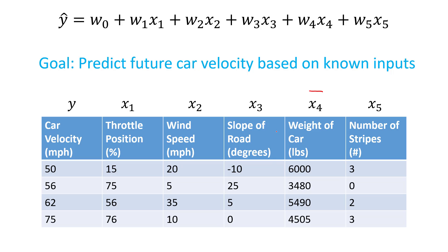Throttle position — the more you push on the gas, of course the faster you think the car is going to go, so we would expect this to be a positive correlation. Both weight and throttle are still important features. Wind speed is actually a tricky one because we don't have data on wind direction, and whether that's helping or hurting us — this feature may just produce noise without being accompanied by the direction of the wind and the direction of the car, so it may end up being statistically insignificant. The slope of the road I would expect to have a negative correlation. The number of stripes, by physical intuition, we would expect to have zero impact — basically an unimportant feature.